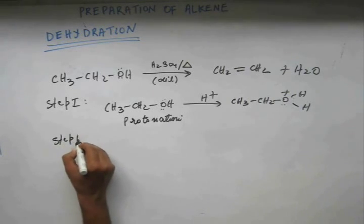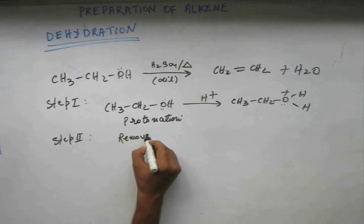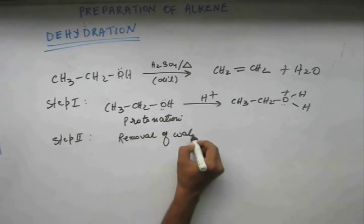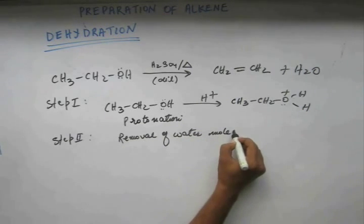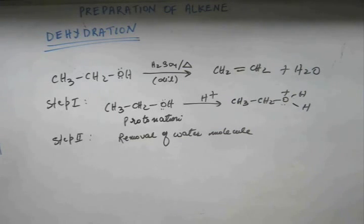Step number two would be removal of water molecule. Now this step we have done numerous times before and I have told you water is a good leaving group. Water is a thermodynamically stable solvent. It's a thermodynamically stable liquid. Water forms two to three hydrogen bonds in the liquid state depending upon the temperature. And because of that hydrogen bonding the boiling point of water is 100 degree Celsius. It's very high. So water is a thermodynamically stable solvent. When a stable molecule is formed in a substrate it tries to leave the substrate and have an independent existence. Now this is our old story.